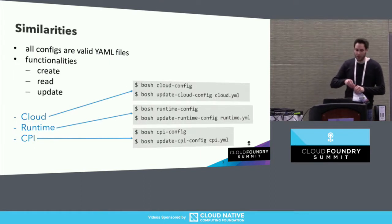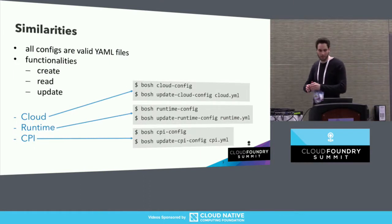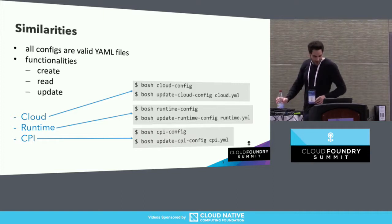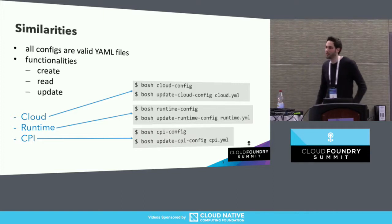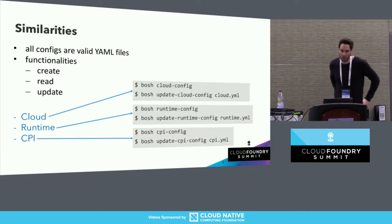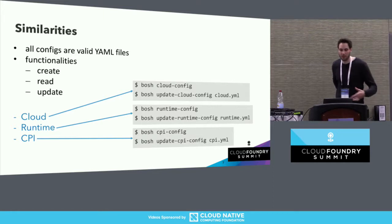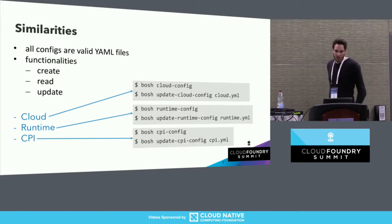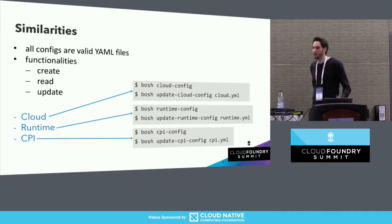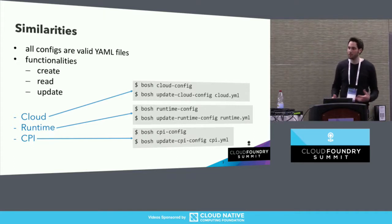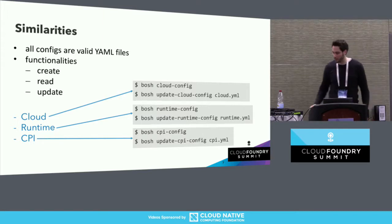So what do the config types have in common? In the beginning, there were no cloud, runtime, or CPI configs at all — everything was specified in the deployment manifest itself. Over time, the concept of different configs was introduced. All existing configs have in common that operators can create, read, and update them, so it makes sense to consolidate them into a single generic config API.